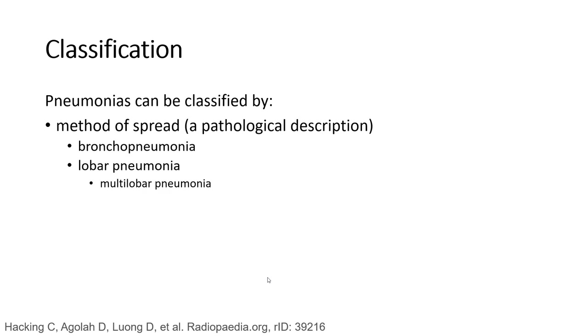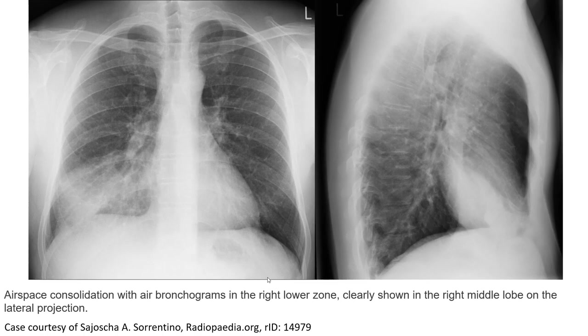Pneumonia can also be classified by method of spread. We can call it bronchopneumonia, lobar pneumonia, or multilobar pneumonia. This chest X-ray sample shows airspace consolidation with involvement of the right upper zone and right lower zone, with a clear zone in the right middle lobe on the lateral projection.